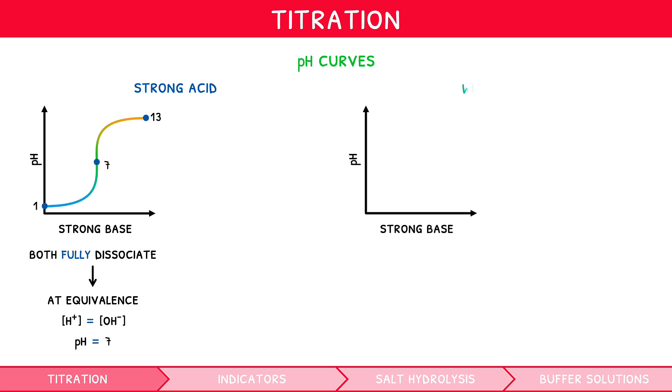When adding a strong base to a weak acid, the weak acid partially dissociates, whereas the strong base fully dissociates. Thus, at equivalence point, the concentration of H⁺ is less than OH⁻, and so pH is greater than 7.